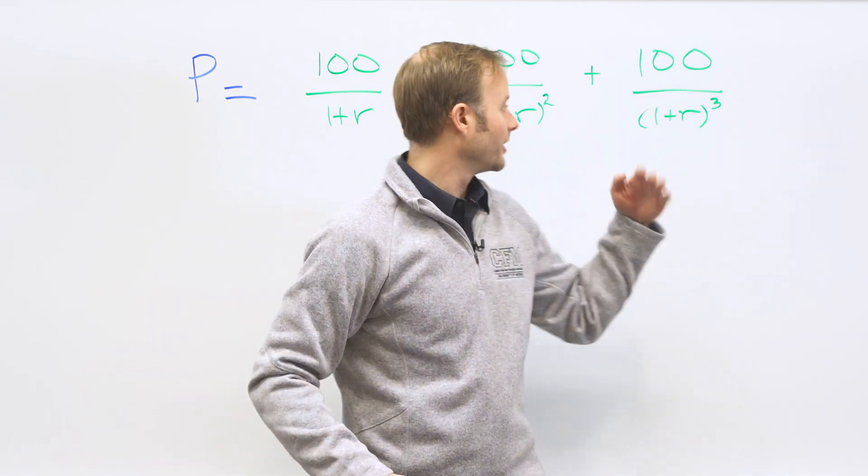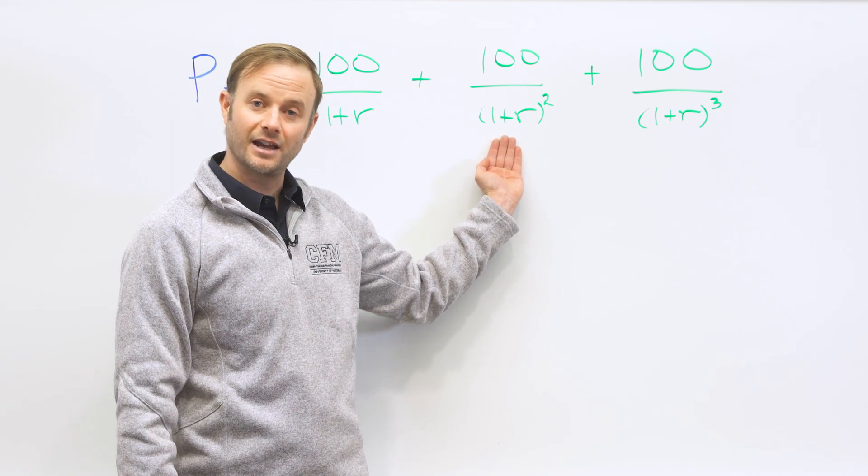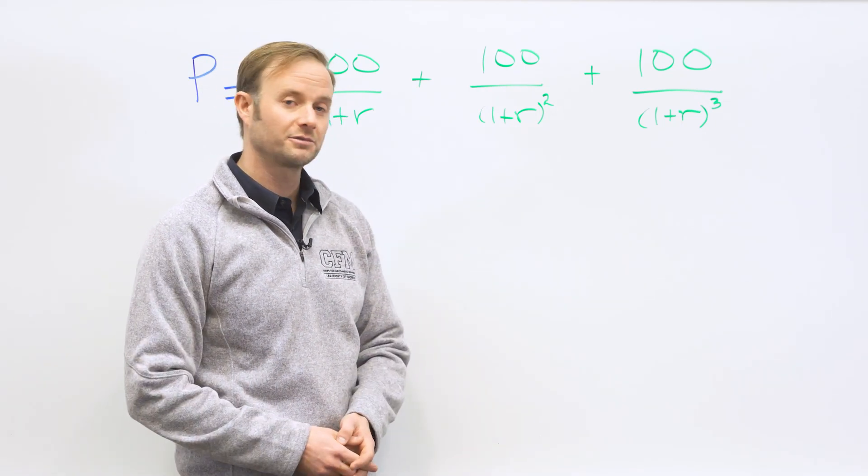The second $100 that you're going to get, you're going to take $100 and discount it back twice. You're going to divide by 1 plus r squared.